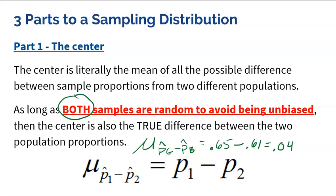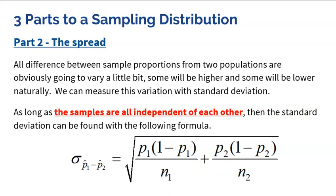We are comparing two populations and two proportions, but all we focus on is the difference — in this case, 4%. The center is simply what you expect. Now, of course, there's also a standard deviation, which tells us how those differences could spread and vary. There's one more condition: the samples have to be independent of each other. This applies within each group — all possible boy samples must be independent, and all possible girl samples must be independent.